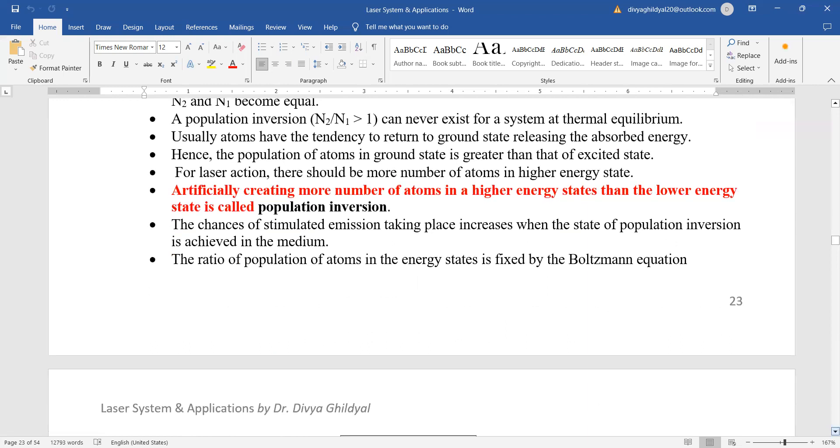The atoms must be continuously raised in their excited state. So that way we achieve the phenomena of population inversion. That means artificially creating more number of atoms in a higher energy state than the lower energy state is called population inversion, which is a necessary phenomena for laser action to happen.